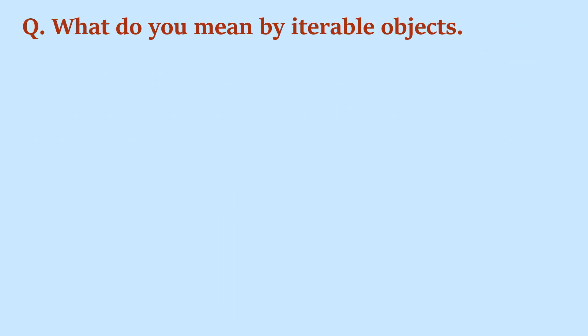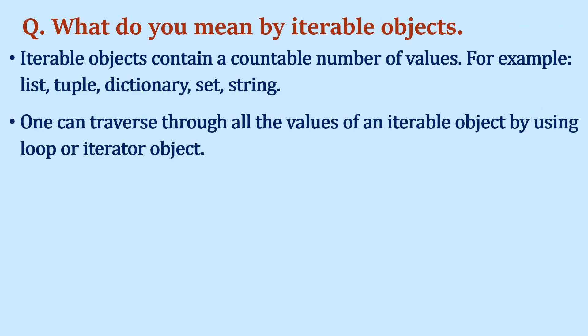What are iterable objects? Iterable objects are objects that contain a countable number of values — for example, list, tuple, dictionary, string, and set are all iterable objects. We can traverse through all the values of an iterable object using a loop, which is the common way. We can also traverse using an iterator object: create an iterator object and use the next() function to traverse through all the values.